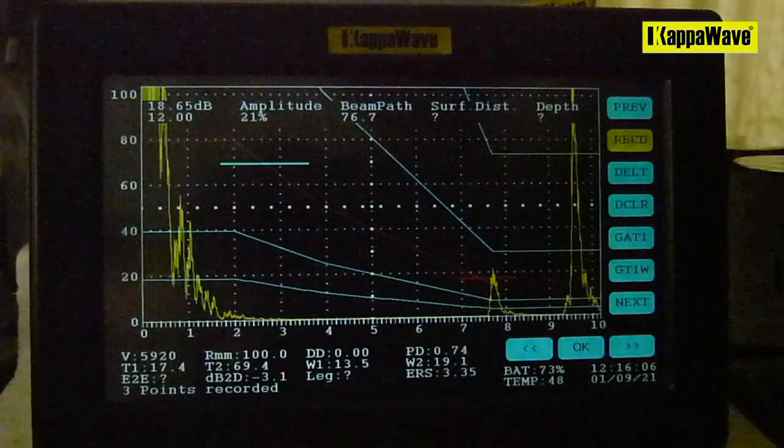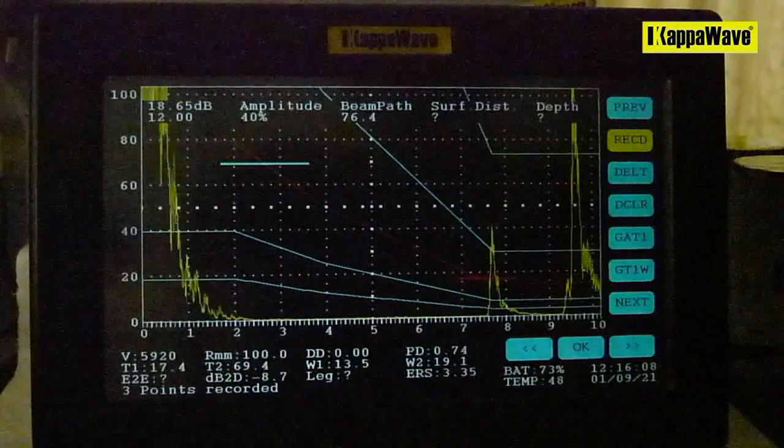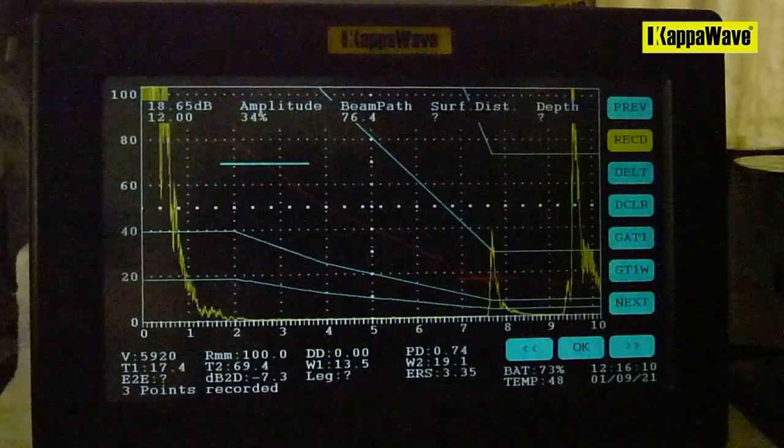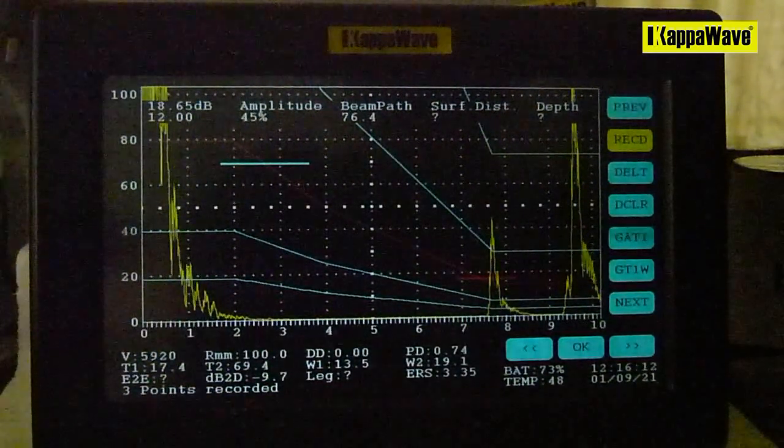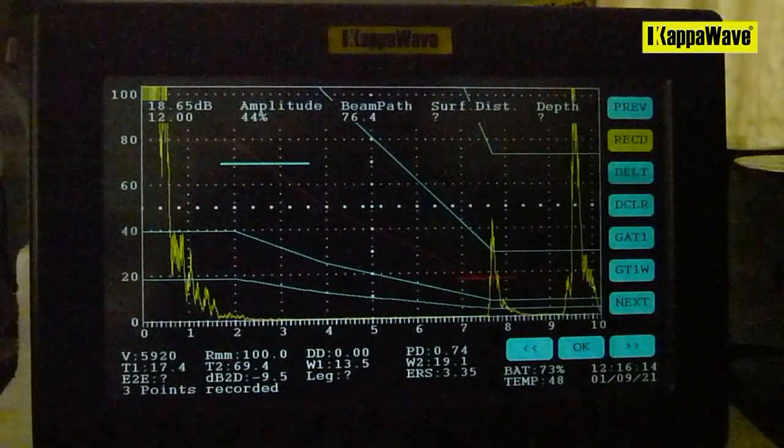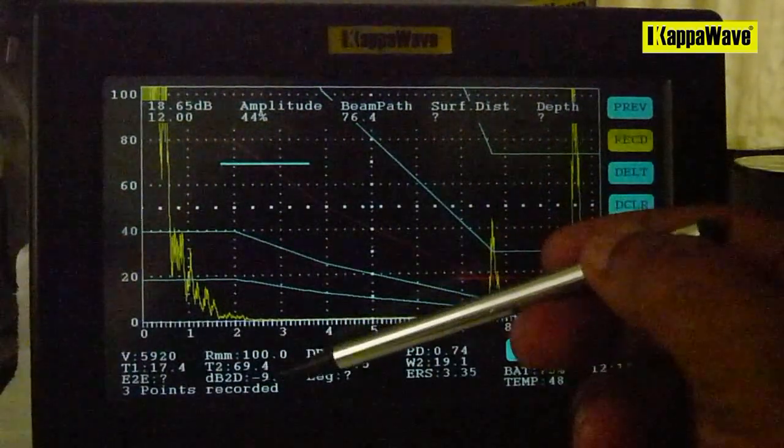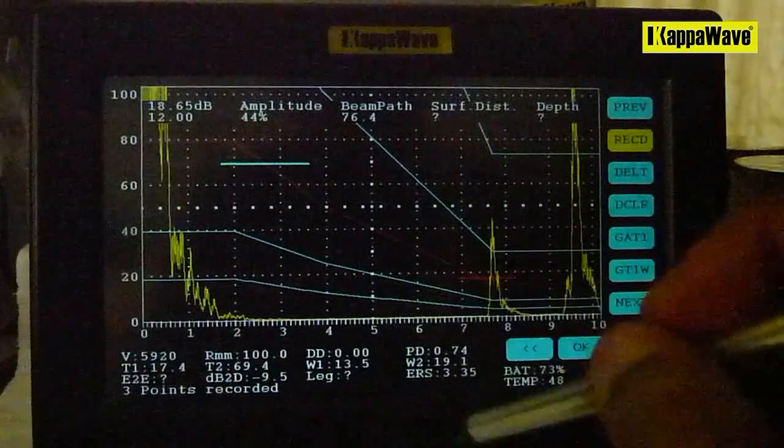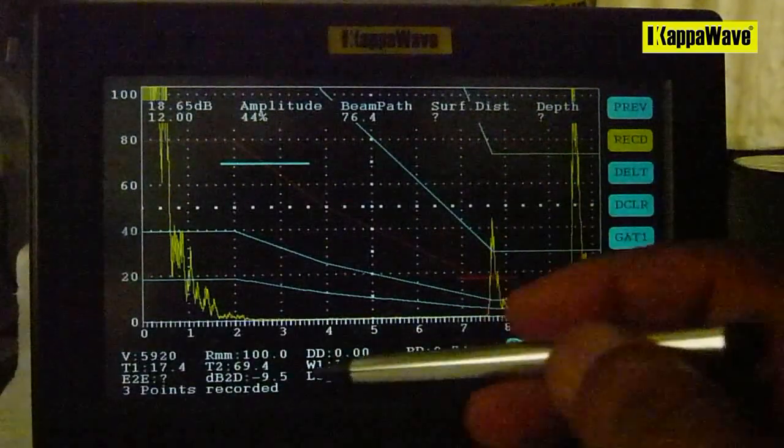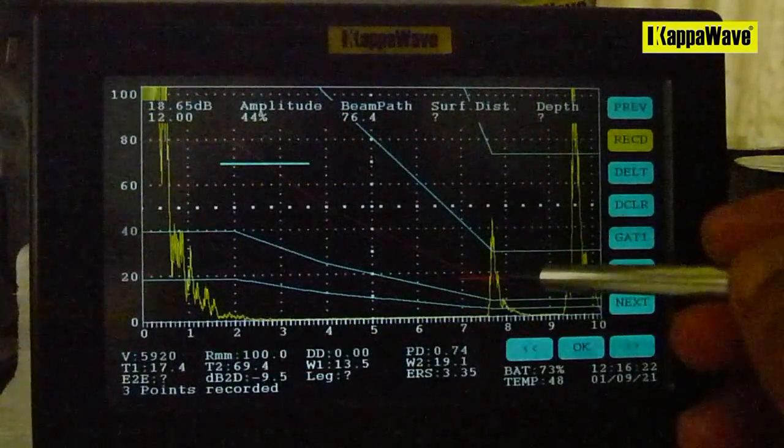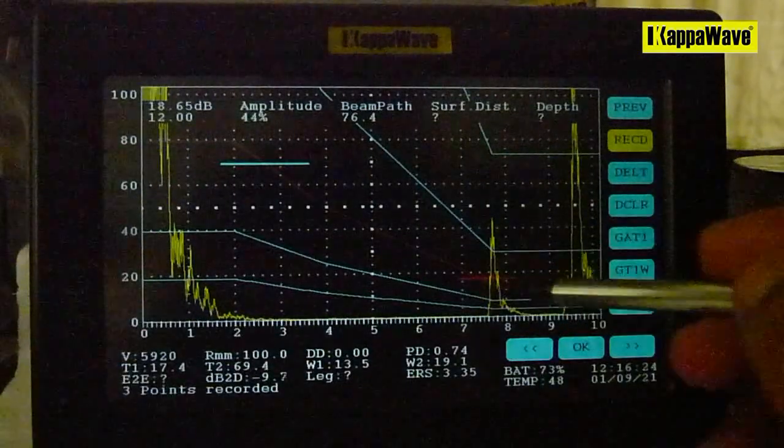Now on the instrument it gives you that difference. The dB to DAC value is given, which means this signal is about 9.5 dB above your DAC.